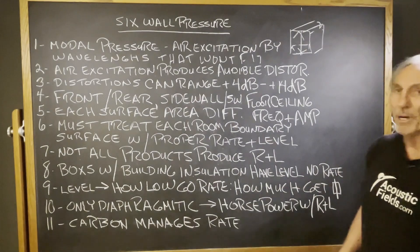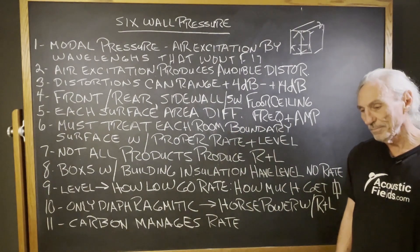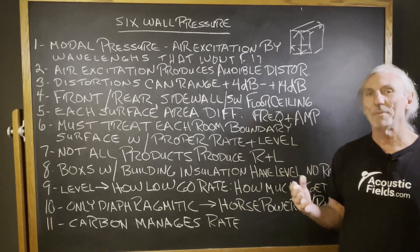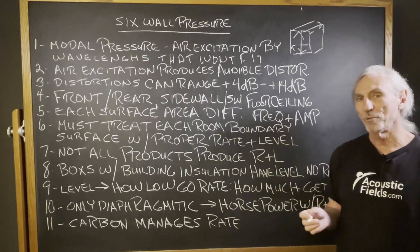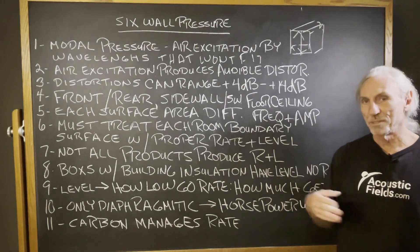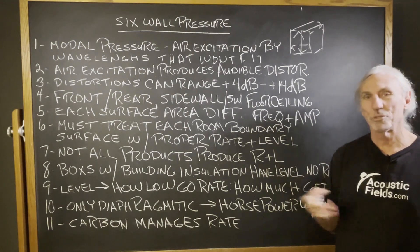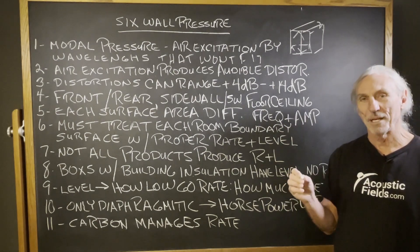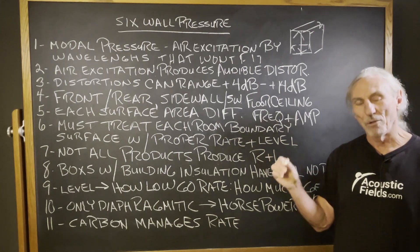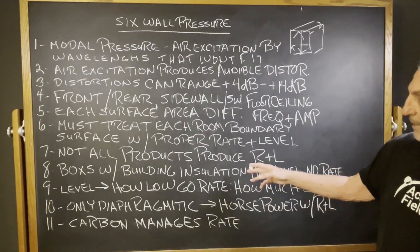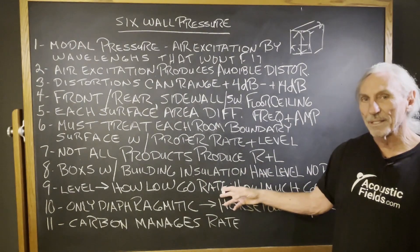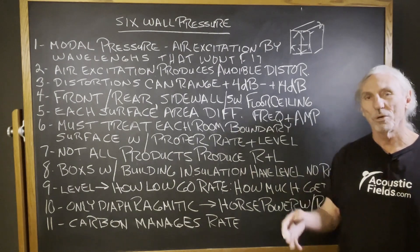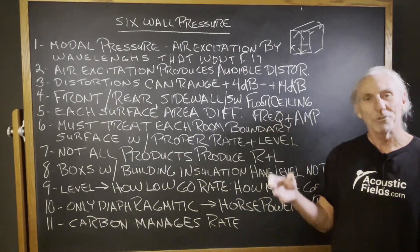Not all products in the marketplace produce the proper rate and level of absorption — and this is critical. Our laws of physics tell us that anybody can design a box that goes down to 40 Hz; that's not difficult. It's the depth and density of the cabinet — those are your two main variables that determine the level of the technology and how low the frequency will go.